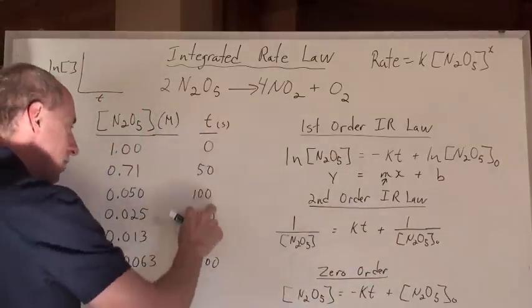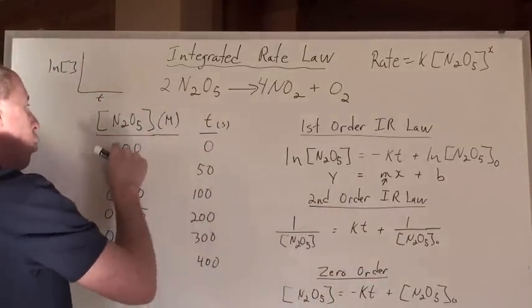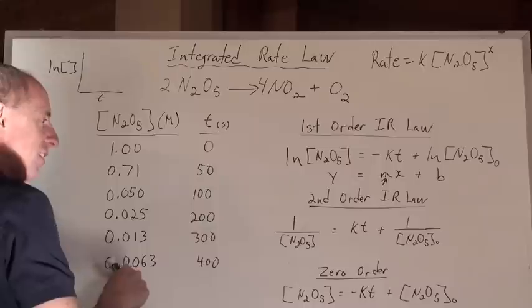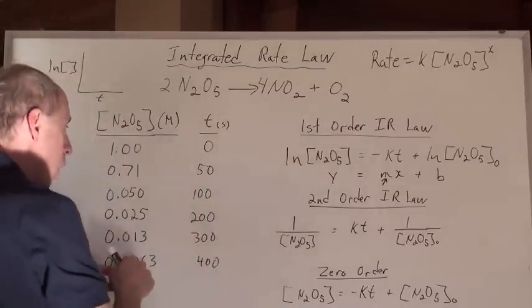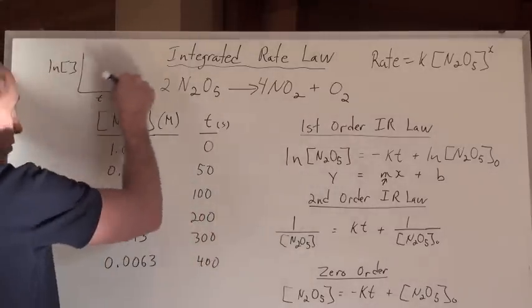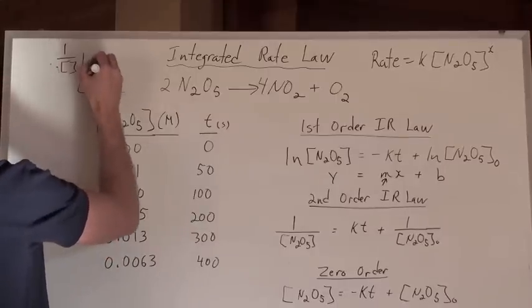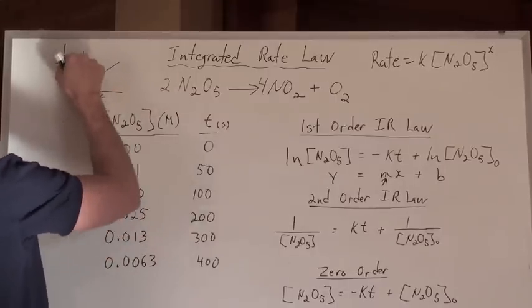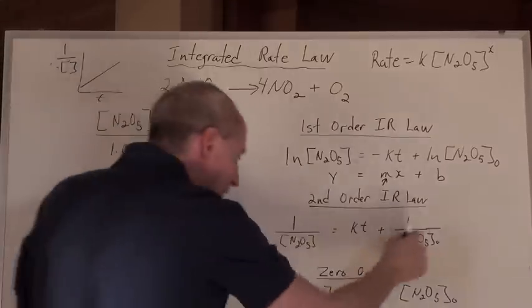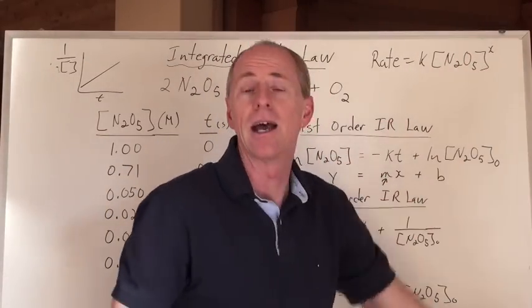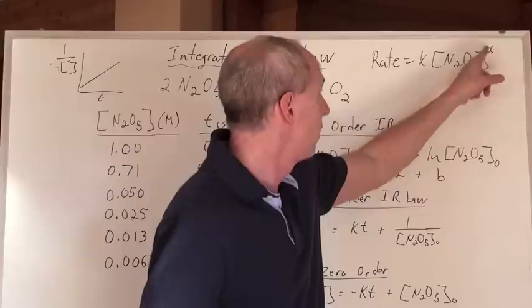So you go 1 over this number versus time. Take all of these times still in your L2 here and put 1 over the concentration of every one of these, 1 over this, 1 over this, this, this, this, as the Y axis variable. And if you get a straight line relationship for 1 over versus time here, then you have a second order reaction in terms of order right there.